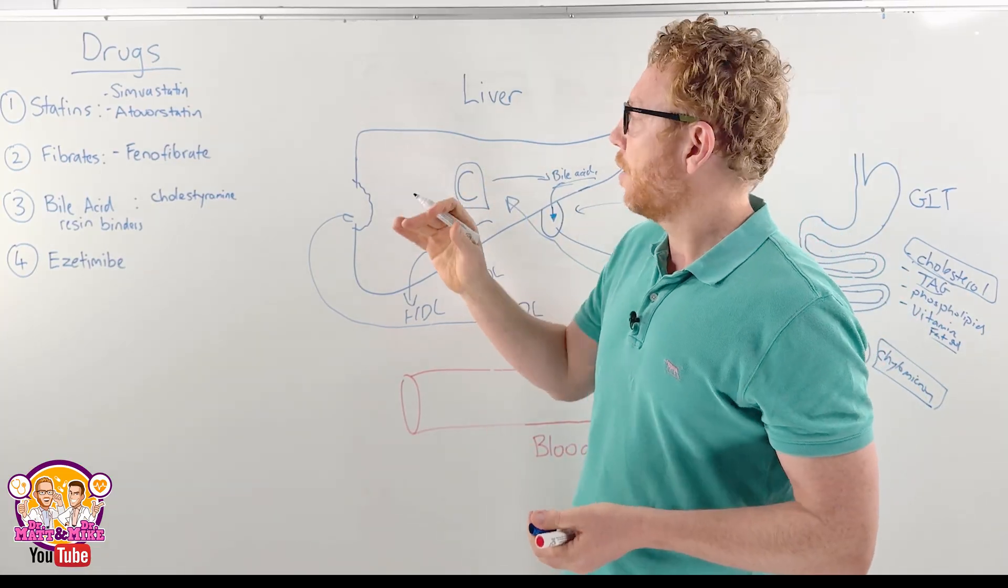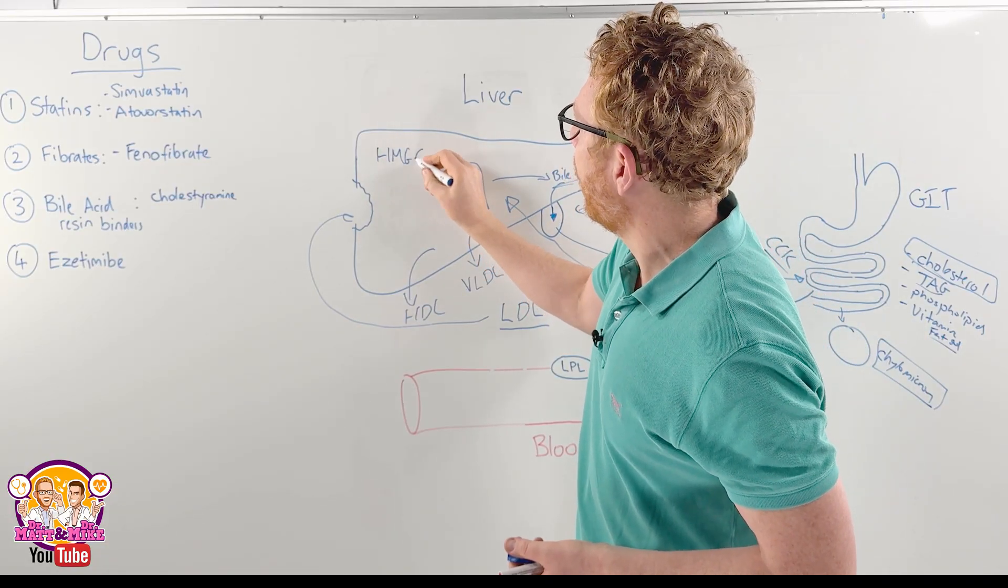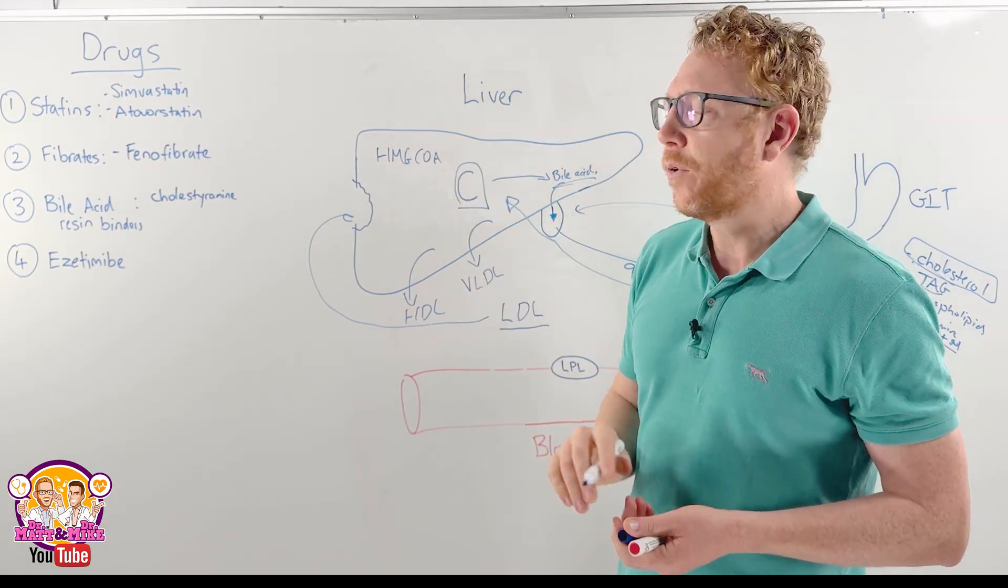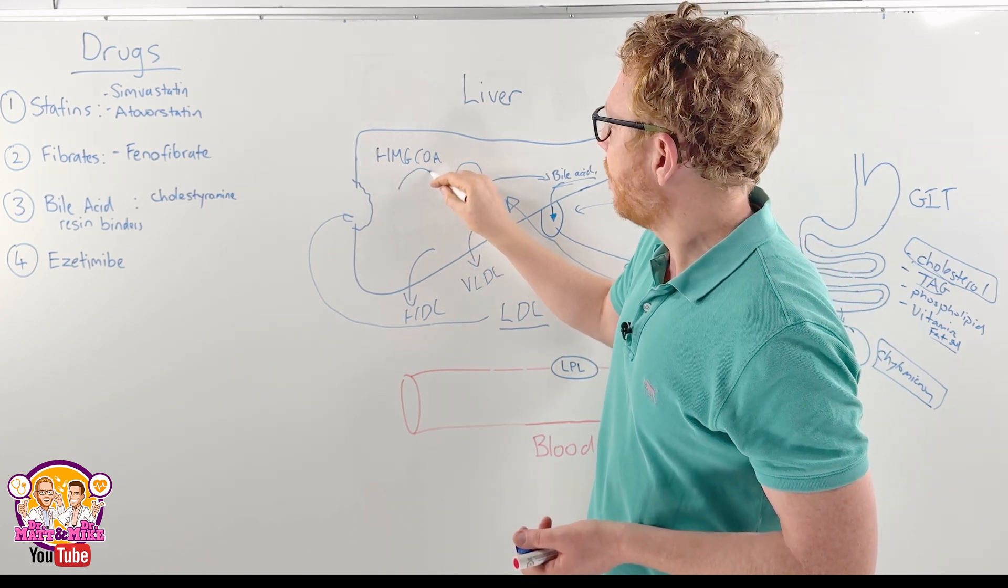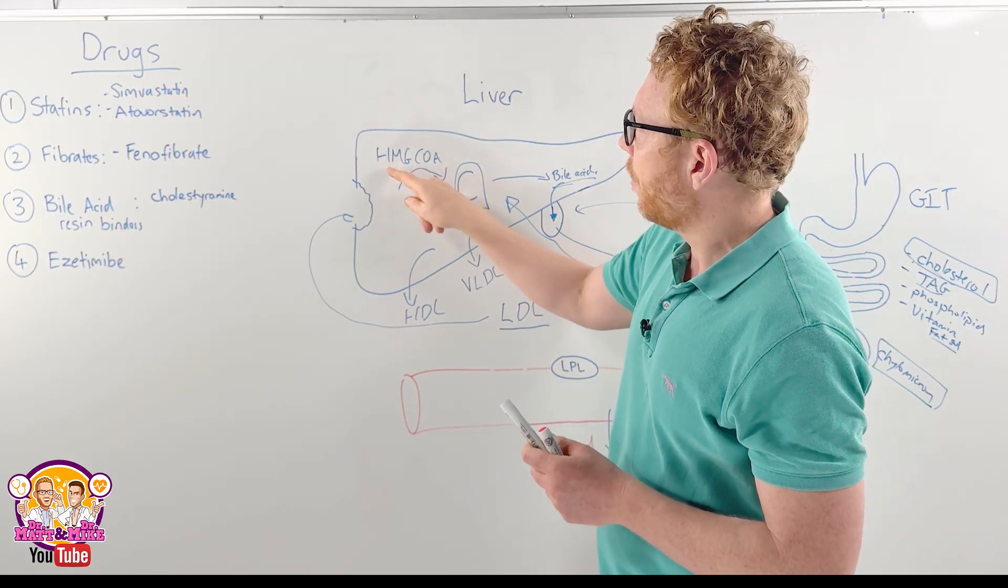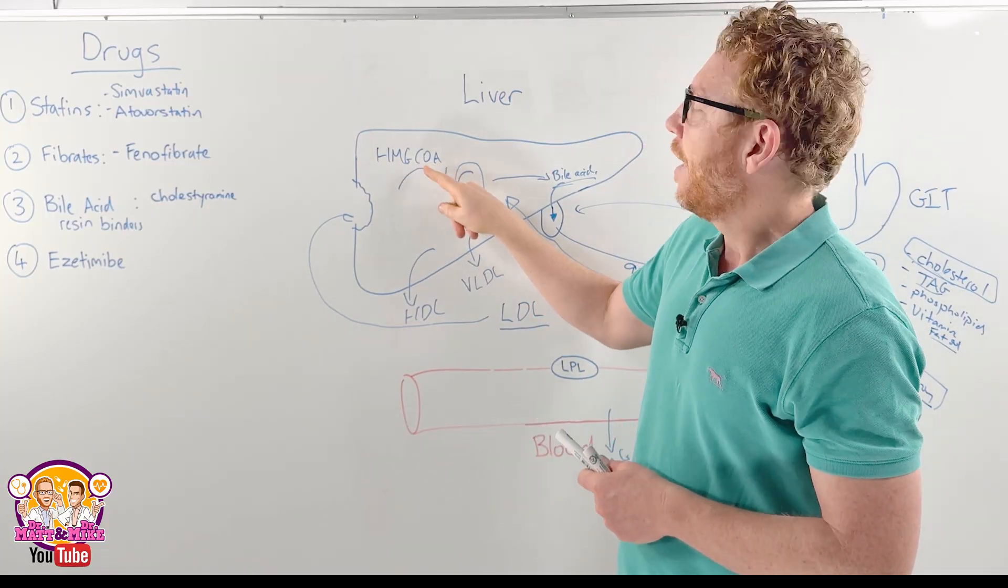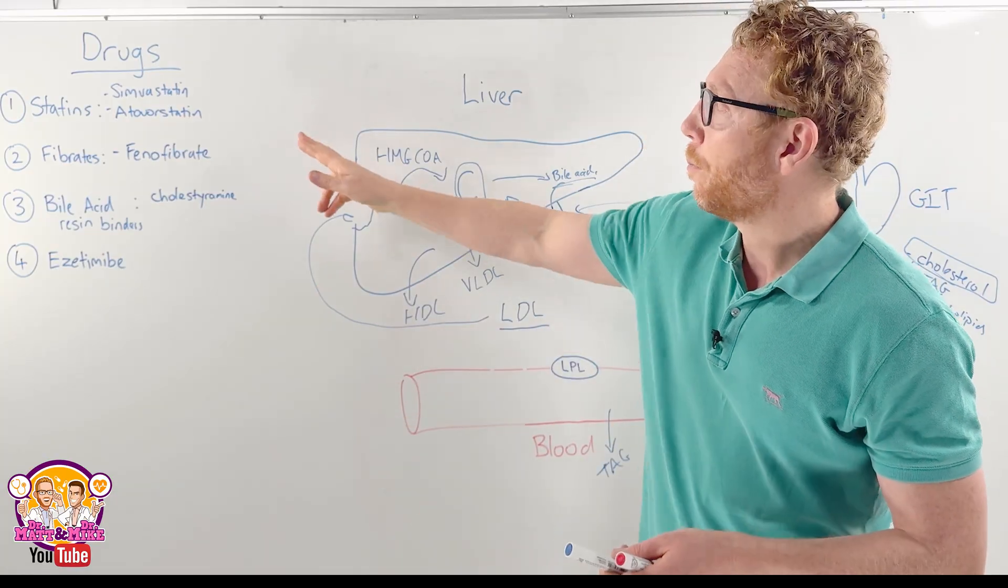Three to four acetyl-CoAs make something called HMG-CoA, and there's an enzyme called HMG-CoA reductase which makes it into mevalonic acid and then eventually cholesterol. It's this enzyme that generates HMG-CoA into cholesterol which the statins are going to be using or blocking, should I say.